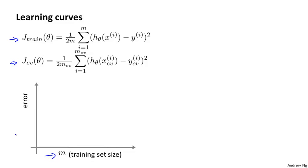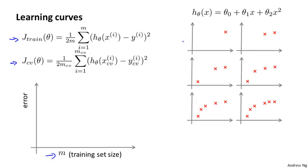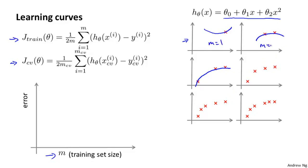Let's see what these plots might look like. Suppose I have only one training example and I'm fitting a quadratic function. If I have only one training example, I'm going to be able to fit it perfectly — zero error. If I have two training examples, with a quadratic function I can also fit that very well. And if I have three training examples, I can fit a quadratic function perfectly. So if m equals one, two, or three, my training error is going to be zero, assuming I'm not using regularization, or slightly larger than zero if I am.